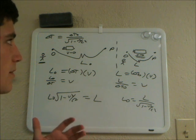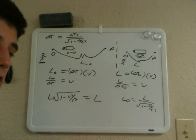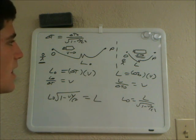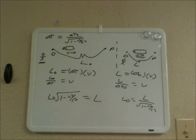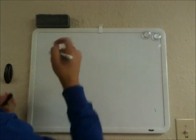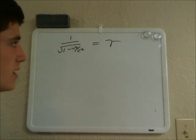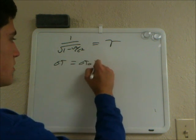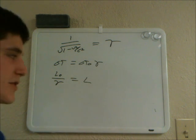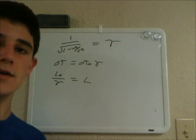The faster you go, the shorter lengths appear to be. The two basic concepts: the faster you go, the slower time appears to pass, and the faster you go, the shorter lengths appear. Those are the differences between reference frames. Finally, we can rewrite these using the Lorentz factor gamma, defined as 1 over the square root of (1 minus V squared over C squared), such that delta T equals delta T naught times gamma, and L equals L naught over gamma. This Lorentz factor shows up a lot in special relativity, and that is length contraction and time dilation.